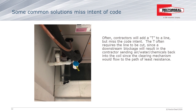The new drain line maintenance code states: drain lines shall be configured to permit the clearing of blockages and performance of maintenance without having to cut the drain line. What's happening out in the field now is a misconception about the intent of this code. Contractors are installing PVC T-fittings in the drain line, or pieces of clear hose, or couplings or unions — and it's missing the intent of the code.